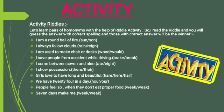The activity is riddles. Let's learn pairs of homonyms with the help of a riddle activity. I will read the riddle and you will guess the answer with correct spelling. The first one: I am a round ball of fire. Options are S-U-N or S-O-N. S-U-N means suraj, and S-O-N means beta. The right answer is S-U-N, sun — suraj.